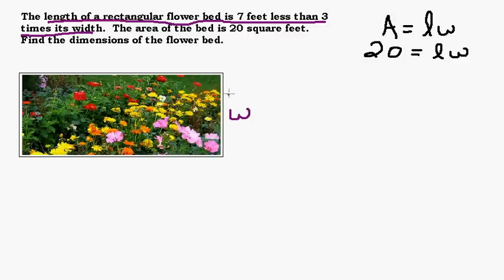So now that we have the width defined as W, and we can put another W over here for our width, then we can describe the length in terms of W. The length with W's in it.